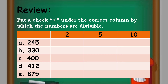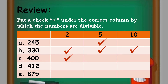Now let's check your work. For letter A, 245 is divisible by 5. For letter B, 330 is divisible by 2, 5, and 10. And for letter D, 412 is divisible by 2. And for letter E, 875 is divisible by 5.